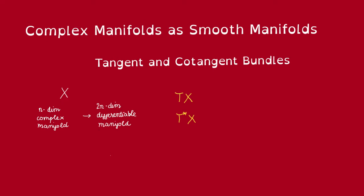So we want to view X as a differentiable manifold of dimension 2n. Using this viewpoint, we're going to define the tangent and cotangent bundles on X and then find local coordinates, local basis for them.